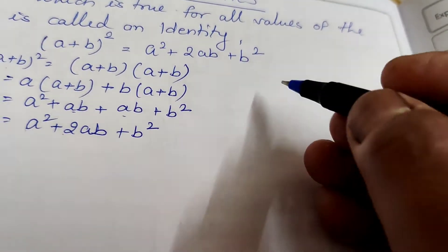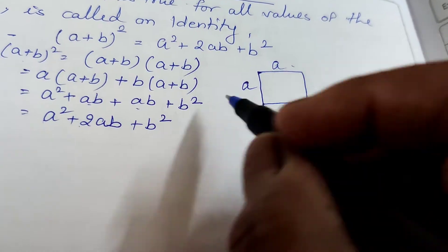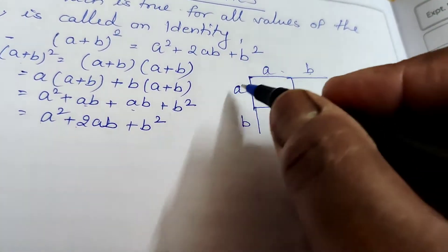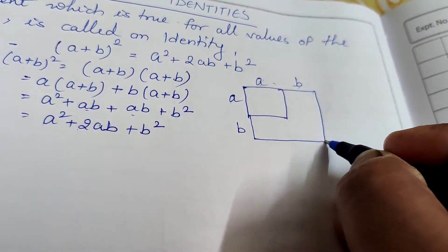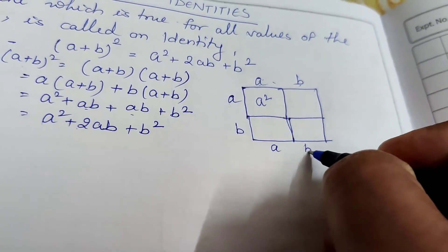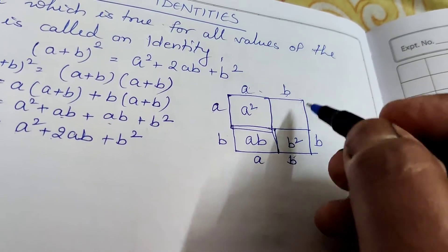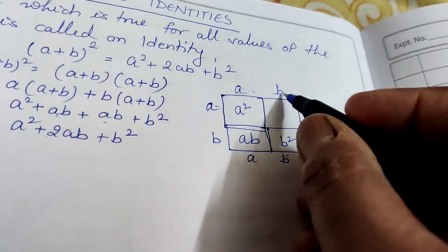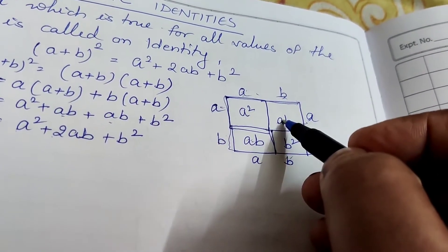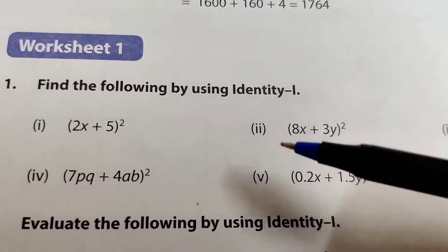We can also prove this using a diagram. Suppose we have a square of side (a + b). We convert it into four pieces: one piece is a² (side a × a), one rectangle of area ab (a × b), another rectangle ab (b × a), and one piece b² (b × b). The total area is a² + 2ab + b².